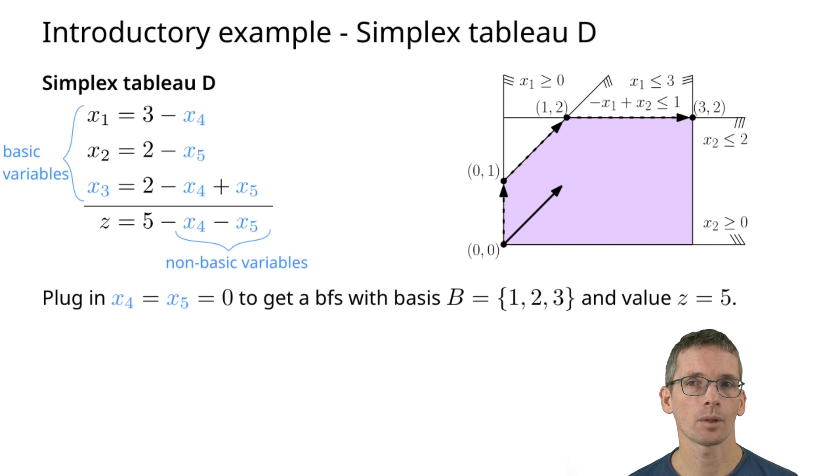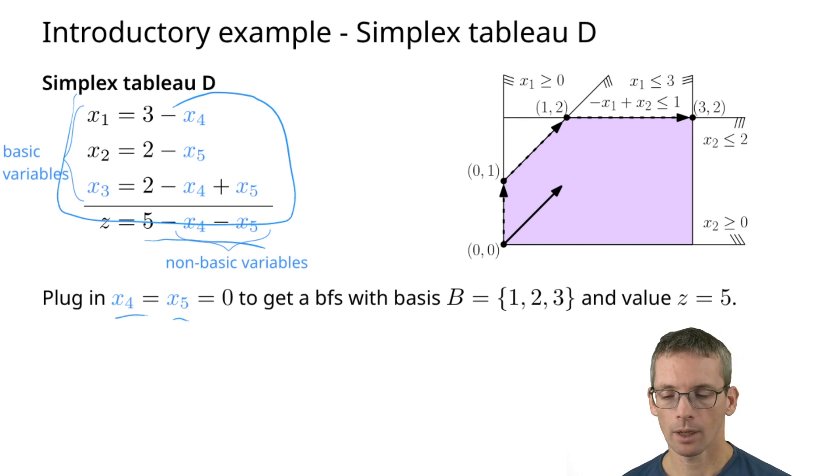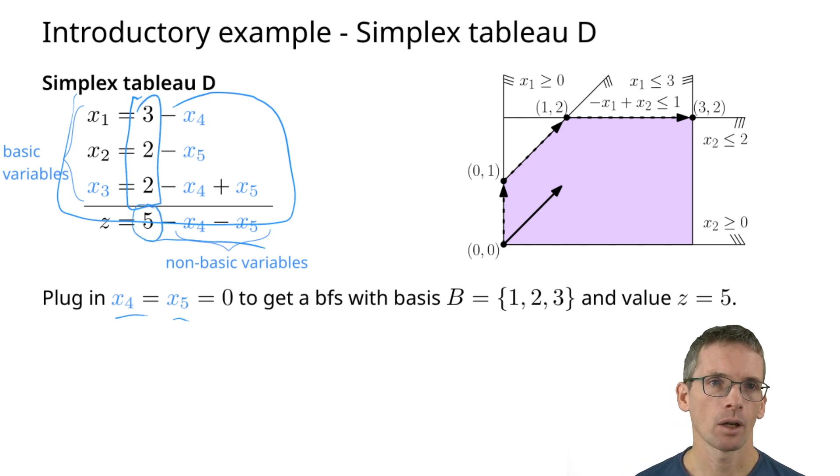Here you see the resulting simplex tableau. So now we have these equations and this is my objective function. Again we get a basic feasible solution by setting x4 and x5, the non-basic ones, to 0. Then I can read off 3, 2. I can also read off that my objective value is 5. It corresponds to this solution here.